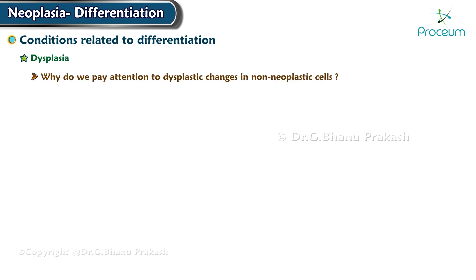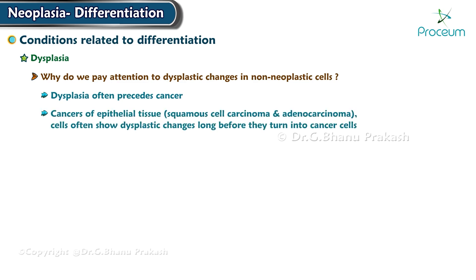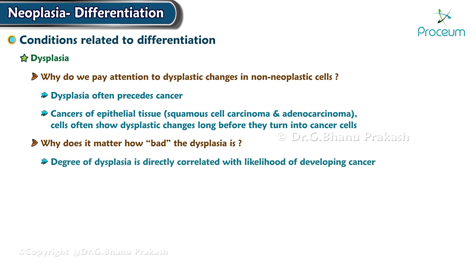Why do we pay attention to dysplastic changes in non-neoplastic cells? Because dysplasia often precedes cancer. In cancers of epithelial tissue such as squamous cell carcinoma and adenocarcinoma, cells often show dysplastic changes long before they turn into cancer cells. The degree of dysplasia is directly correlated with the likelihood of developing cancer. Sometimes dysplasia disappears and the cell reverts to normal, never progressing to become cancerous.